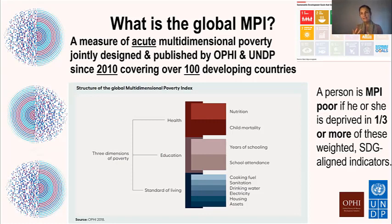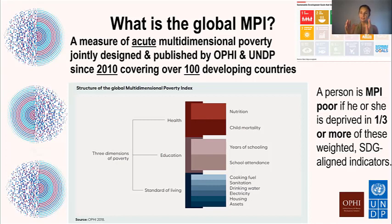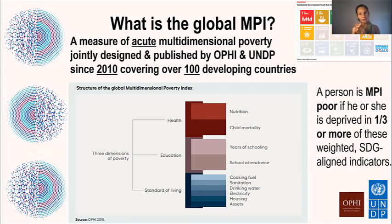These indicators relate to SDGs 1, 2, 3, 4, 6, 7, and 11. Recall that the first SDG is to end poverty in all its forms and dimensions. SDG 1 takes an explicitly multidimensional approach to poverty alongside monetary, because deprivations in practice are interlinked at the level of the person.